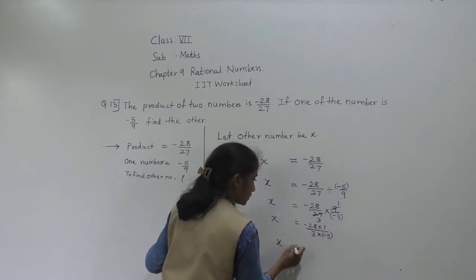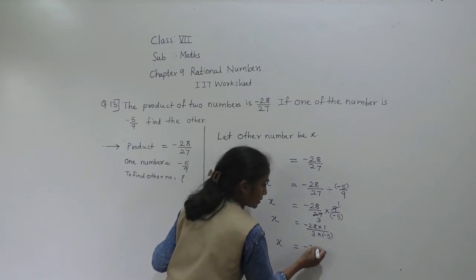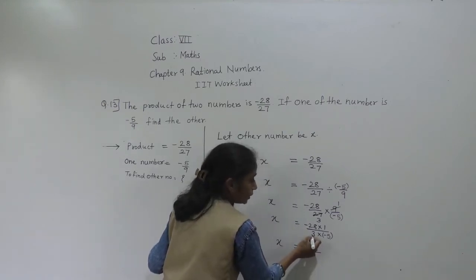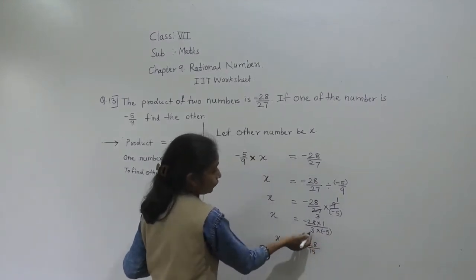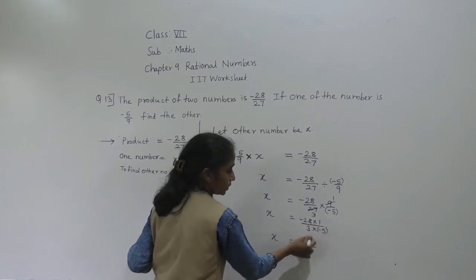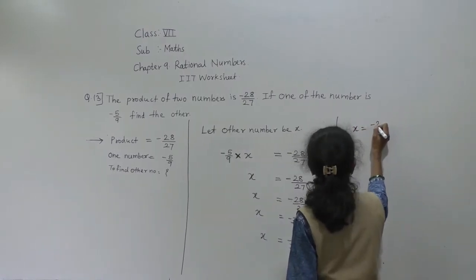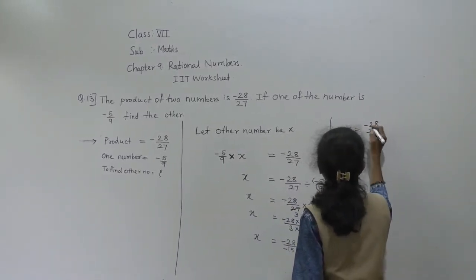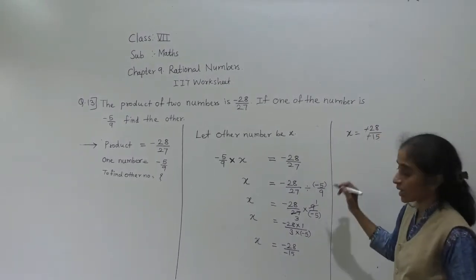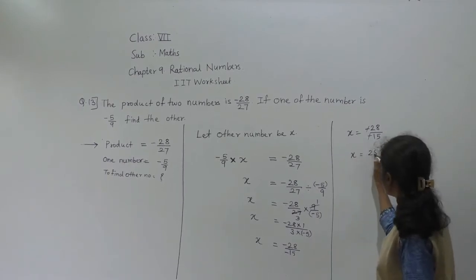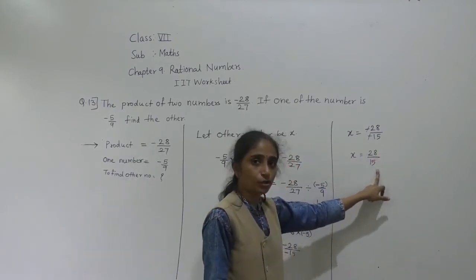For the denominator: 3 into minus 5. This number is negative, so the product will be negative. 3 fives are 15. The 3 is positive and 5 is negative, so the product will be negative. So X equals minus 28 upon minus 15.